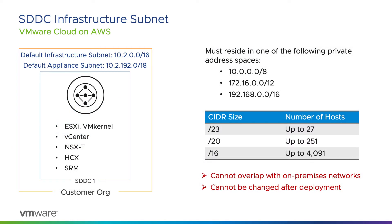During the deployment of the SDDC, we must specify the IP address range for the management subnet. This subnet will be used to assign IP addresses to all VM kernel interfaces on the ESXi hosts, as well as all of the management appliances, such as vCenter. By default, this is set to 10.2.0.0/16. CIDR blocks of /16, /20, or /23 are supported and must be in one of the private address-based blocks defined by RFC 1918.